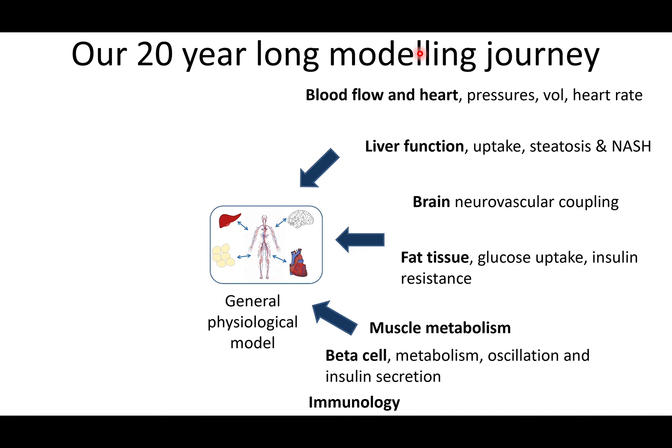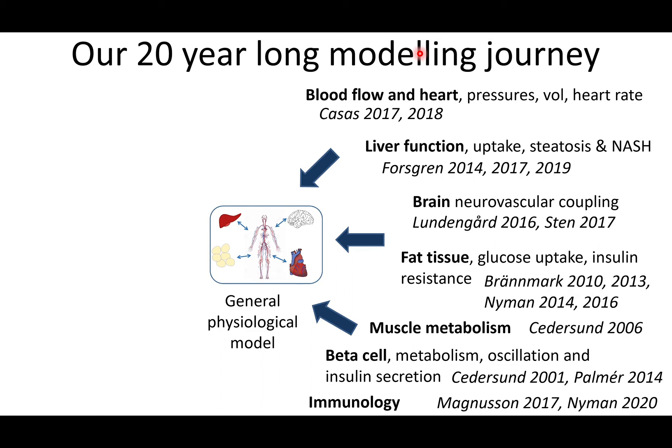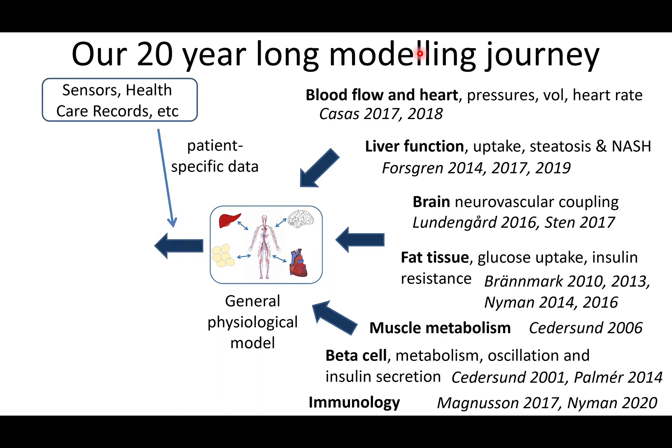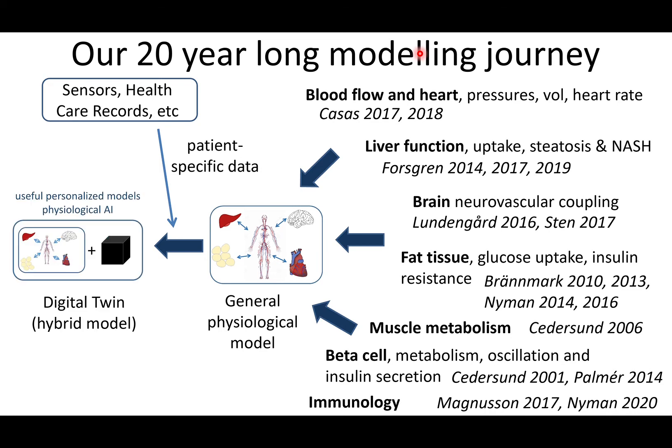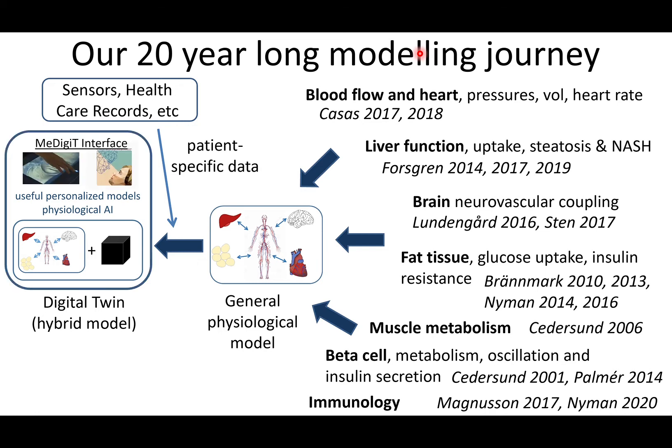During the last 20 years I've been building mathematical models for all of the main organs in the body. Here you see references to scientific papers, and we have now combined them into a general physiological model that becomes patient-specific by adding patient-specific data. This gives us a model for a specific person, which we call a digital twin — like a copy, a twin that looks like the person on the outside and on the inside. We also have a software interface for this.